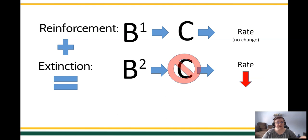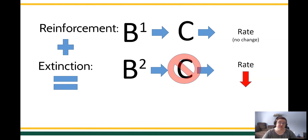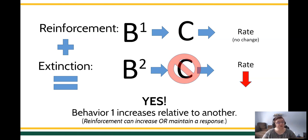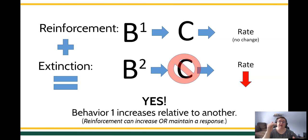Looking at another example: behavior 1 is contacting reinforcement, but we see that behavior remains unchanged in its rate. Behavior 2 is no longer reinforced, and we see a decrease in the rate of responding. Is this differential reinforcement? Yes, because one behavior is maintaining while another decreases. We're just looking at relative changes in the rate of response to the other behavior as a result of differential reinforcement. Go back and watch that again if you're having difficulty. What we're looking for is: when a behavior is reinforced, do we see an increase relative to another? Or when a behavior is decreased, do we see that drop in rate relative to another that maintains?